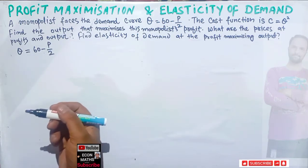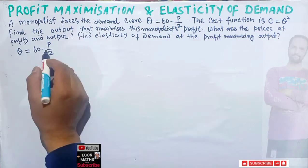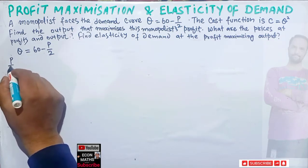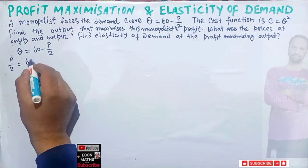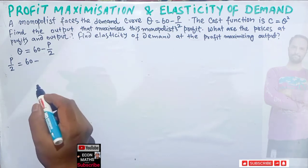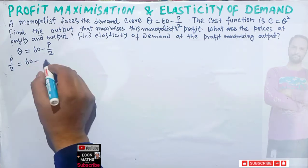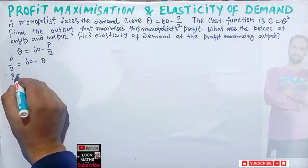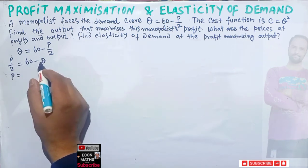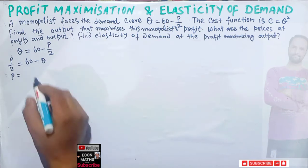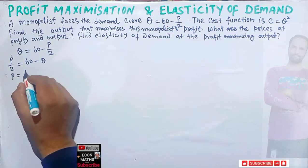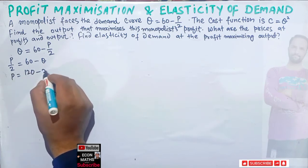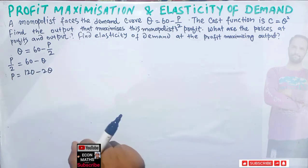To find the inverse demand function, we transpose p/2 to the left side: p/2 = 60 - q. Multiplying both sides by 2, we get p = 120 - 2q. This is our inverse demand function.